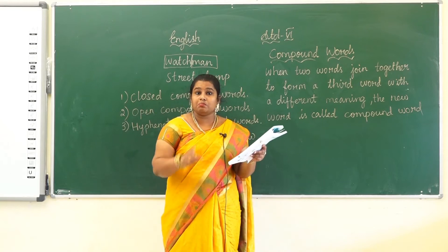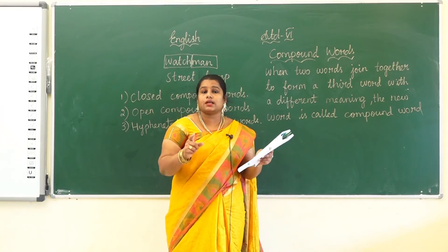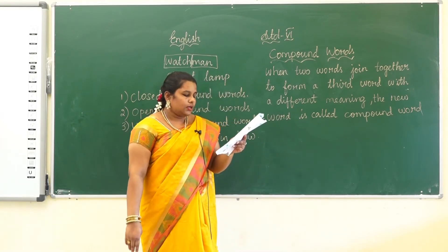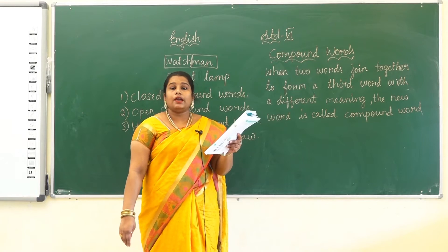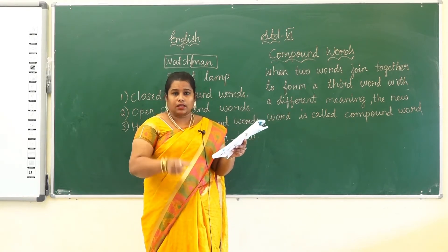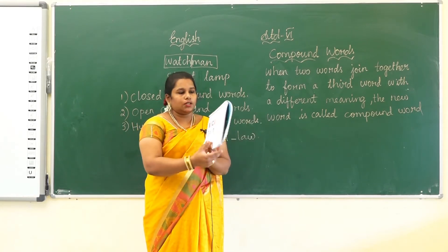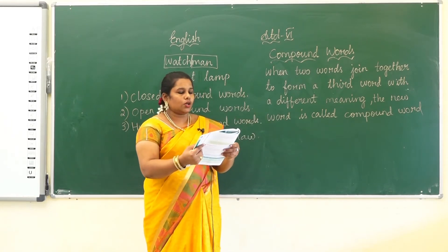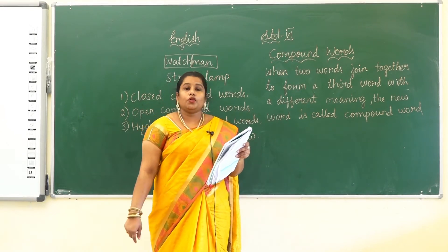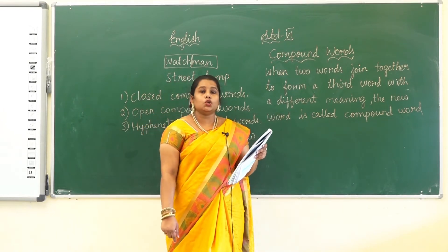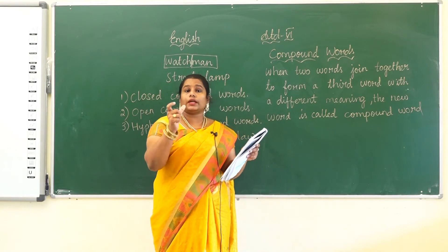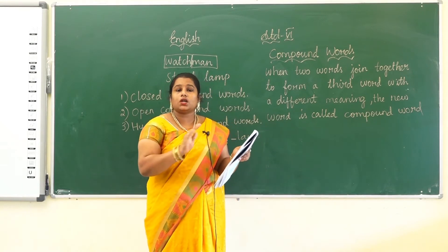Next, sunflower — we must write sunflower together, not separate. Next, everyone — we want to write together. A closed compound word is football. Next, notebook — we want to write together only, not separate.